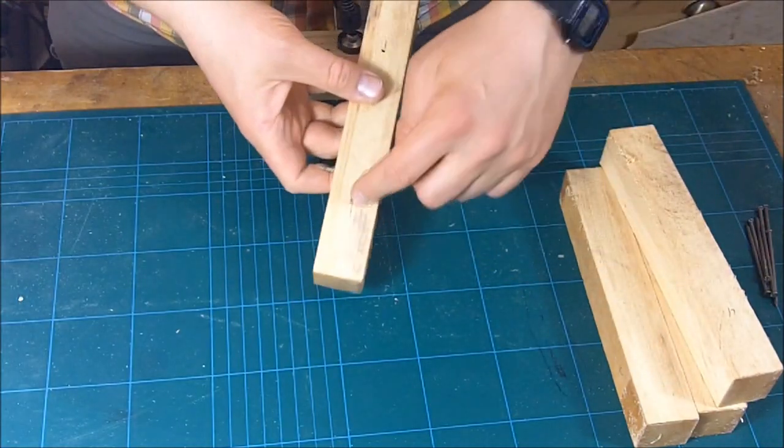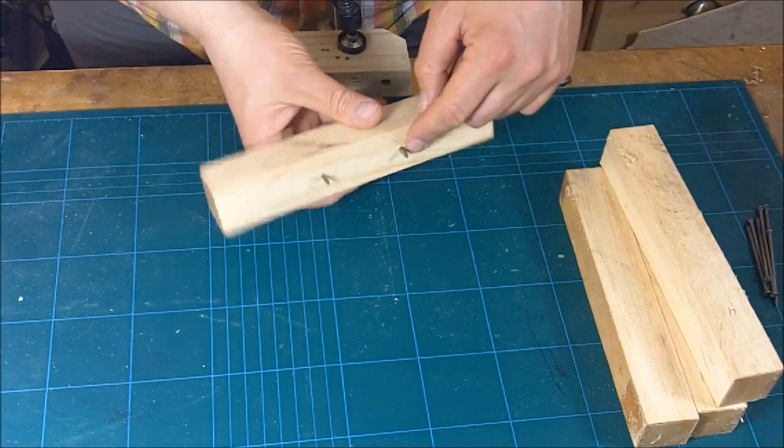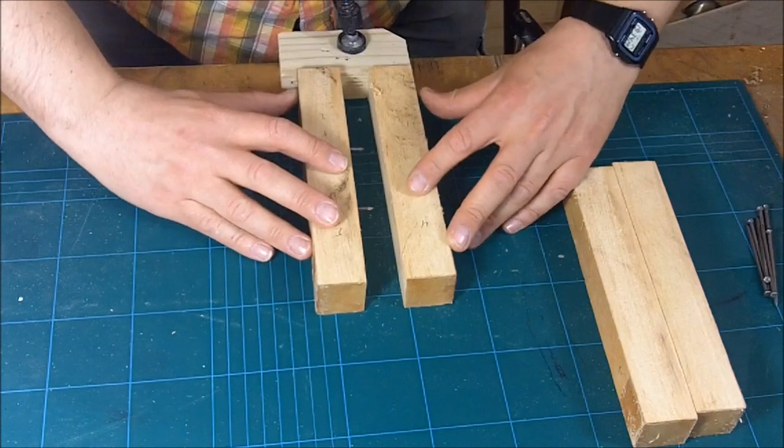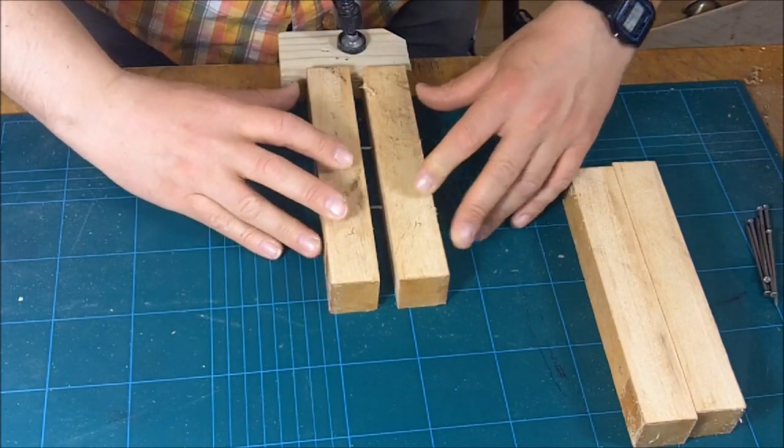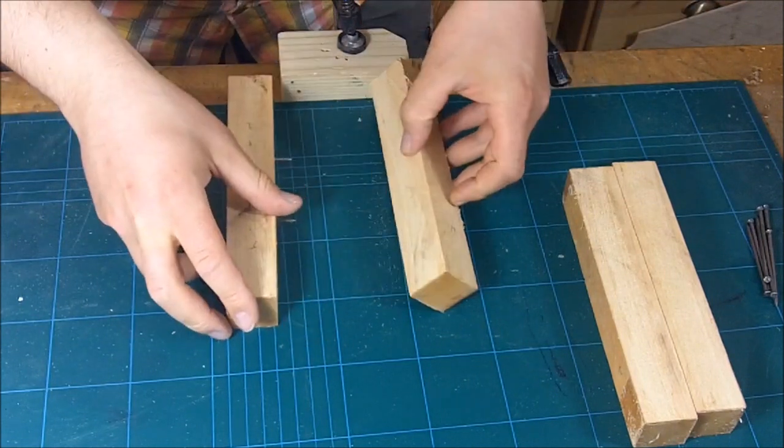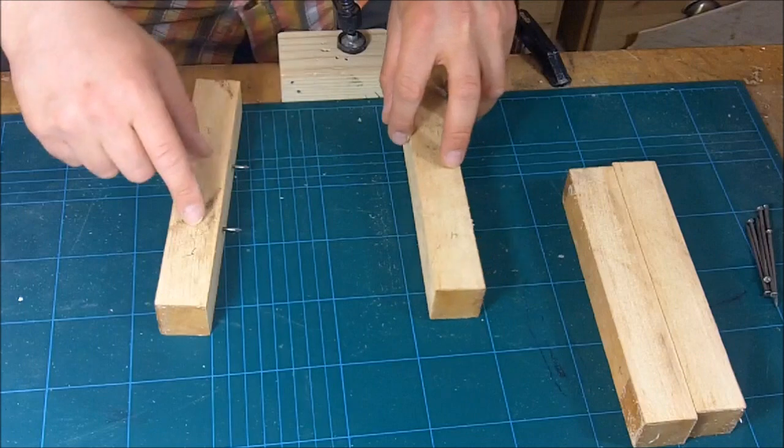Now that I drilled the holes in one of the four pieces, I insert two nails and with the help of these nails I can now line up the two pieces and gently press. Now I have a mark, an indentation, where I need to drill the corresponding holes.